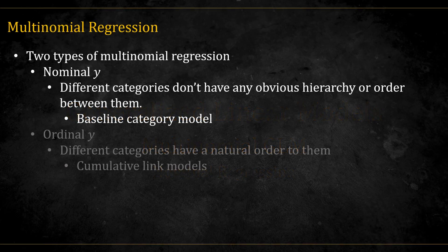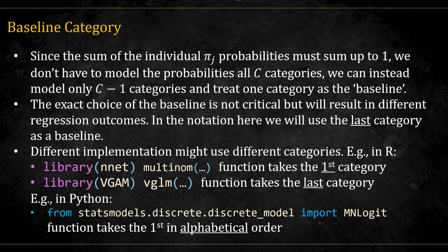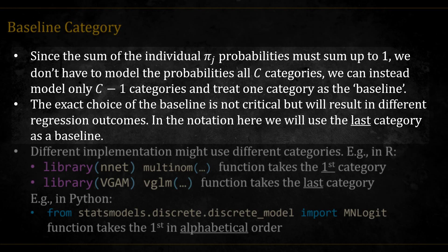As mentioned in the last video, there are two types of response data. There's nominal, in which the different categories don't have any obvious hierarchy or order between them. The way to model this is called the baseline category model. In the next video, we'll go in depth into ordinal data, in which different categories do have a natural order to them. The idea of the baseline category model is that since the probabilities sum up to 1, we don't need to model all C categories. Instead, we model C-1 categories and treat one category as the baseline, which means probability-wise that it's equal to 1 minus all the rest. The exact choice of the baseline is not critical, but it will change the results we get from the regression. In the notation in this lecture, we're going to use the last category, that is category C, as the baseline.